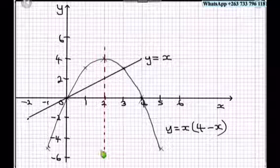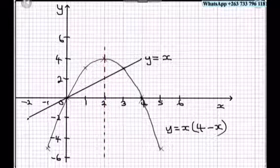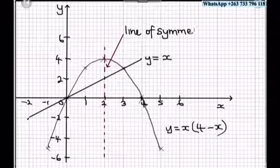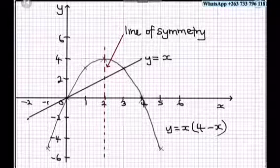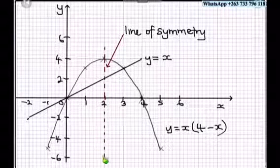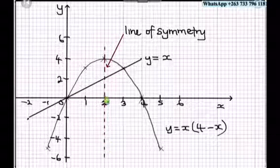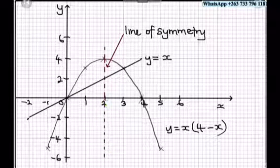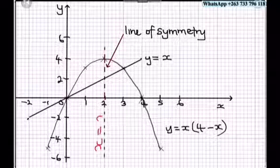So I'm using a broken line here. This is our line of symmetry. And the equation for the line of symmetry, you can see that this is a straight line parallel to the y-axis and it's passing through the point x equals 2. So the equation is x equals 2.